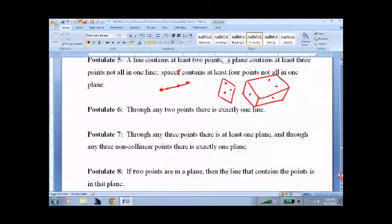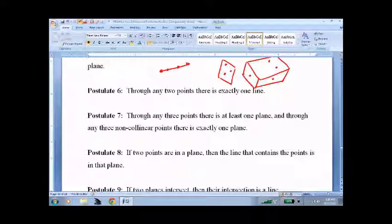And these get tricky, so you just have to keep them handy, hence the reason they're typed up for you. Through any two points, there's exactly one line.